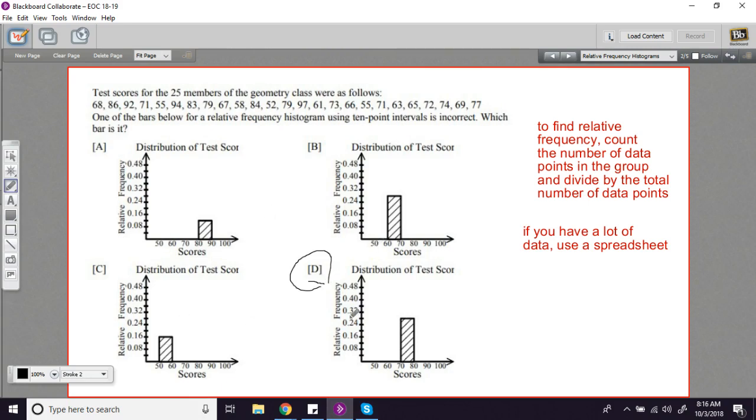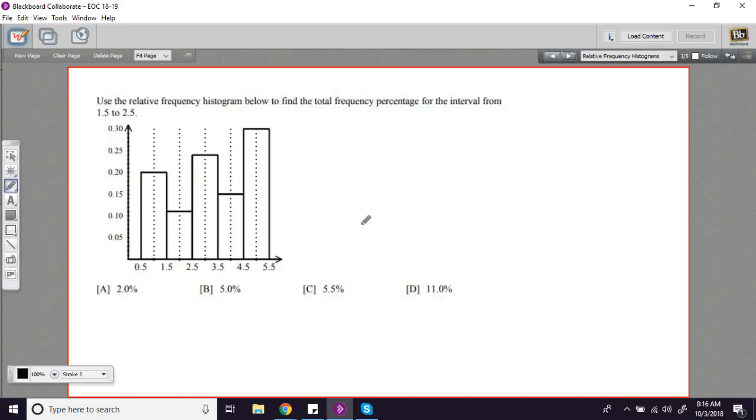You may want to double check the rest of these, but I think we've got the right answer there. Let me show you another kind of problem. And this one's pretty simple. Here they've built a relative frequency histogram for us. And they're just asking to find the frequency percentage of an interval. And the interval they're telling us about is from 1.5 to 2.5.